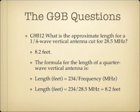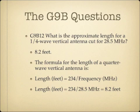What is the approximate length for a quarter wave vertical antenna cut for 28.5 megahertz? The answer is 8.2 feet. The formula for a quarter wave vertical antenna is: length in feet equals 234 divided by frequency in megahertz. So 234 divided by 28.5 MHz equals 8.2 feet. This is easy to remember: a quarter wave vertical is half the length of a half wave dipole, and 234 is half of 468.